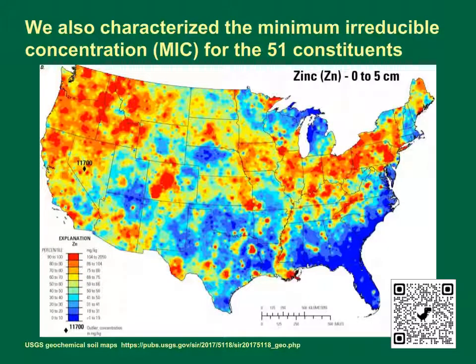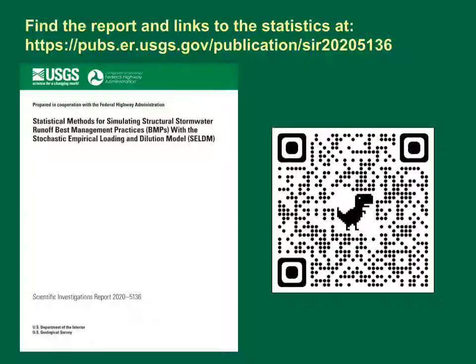We also characterized the minimum irreducible concentration, MIC, for the 51 constituents. We calculated MIC values for each constituent and BMP with sufficient data. We tried to correlate the MIC to natural soil geochemistry for selected constituents, but correlations were weak. The best qualitative predictor for the outflow MIC values seemed to be the geometric mean inflow concentrations.